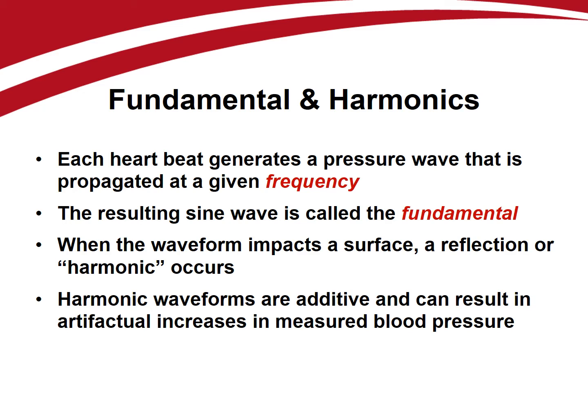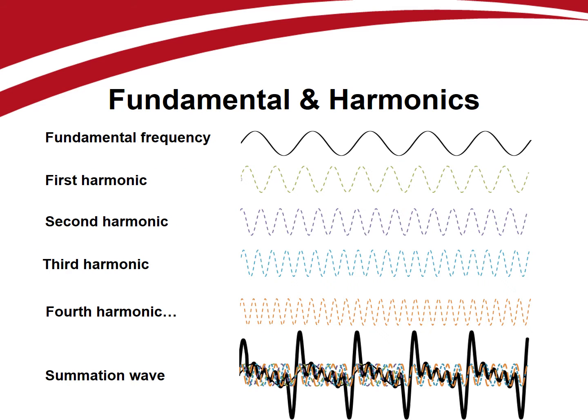When the waveform impacts a vessel wall, transducer, or other obstruction, a reflection or harmonic occurs. Harmonic waveforms are additive and can result in artifactual increases in systolic and decreases in diastolic blood pressure. Harmonics develop as the fundamental wave bounces off of blood vessel walls, catheters, stopcocks, and other obstructions, resulting in reflected waves of varying strength and frequency. A typical blood pressure wave is comprised of the fundamental and 6–10 harmonics. Together, these waves represent the arterial pressure waveform that we measure at the patient's bedside.